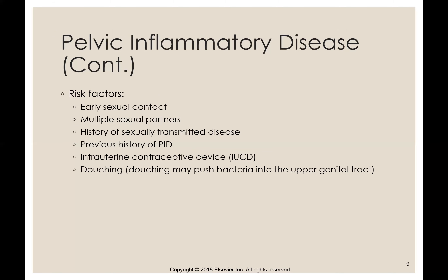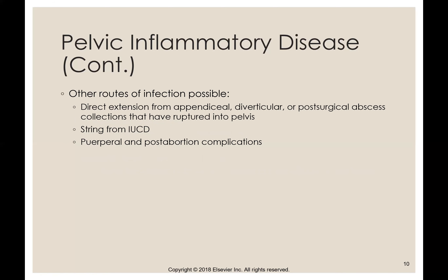There are many risk factors: early sexual contact, multiple sexual partners, a history of STD, previous history of PID, and an IUD could potentially cause pelvic inflammatory disease. Other routes of infection include a ruptured appendix, diverticulum, a post-surgical abscess, an infected IUD, and after a mom delivers a baby — post-miscarriage or abortion complications can also cause pelvic inflammatory disease.